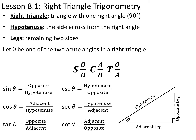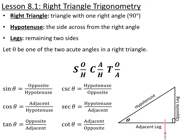If you have an angle inside of your triangle that we're going to call theta, then the side that is across from that angle we call the opposite side. The side that is attached to that angle, that's not the hypotenuse, we call the adjacent side or the adjacent leg.